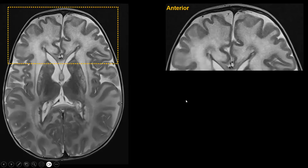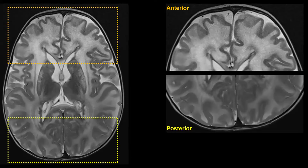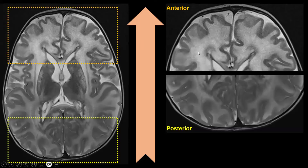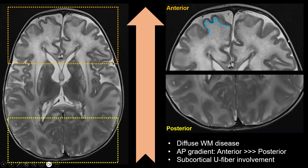Looking at the T2 weighted images in detail: in the frontal lobes we see diffusely increased T2 signal in the white matter, which shouldn't be the case in a one-year-old girl. Comparing to the occipital lobes, there are also signal abnormalities there but they are less pronounced — so there's a clear gradient. The abnormalities are most pronounced frontally and less conspicuous posteriorly. Furthermore, the cortex is normal, but the white matter abnormalities extend all the way to the cerebral cortex, meaning the subcortical U-fibers are also involved. To summarize: diffuse white matter abnormalities with a clear anterior-to-posterior gradient, and involvement of the subcortical U-fibers.